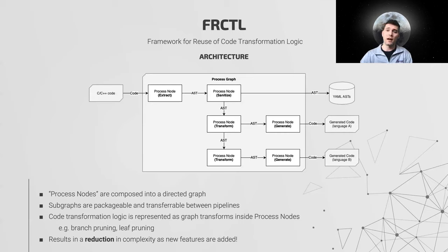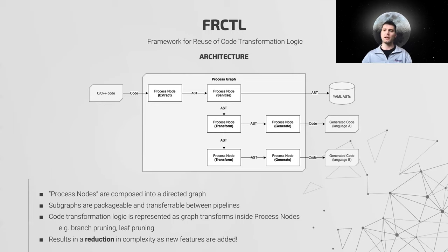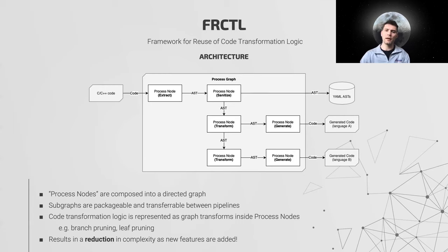The name Fractal is a nod to the fact that the structure of both the framework and the data upon which it operates are both recursive. Both are treated as directed graphs with code generation pipelines separated into small atomic logical chunks known as process nodes. Each node performs its task and passes the resultant syntax tree to the next process node in the process graph in the style of TensorFlow networks. In this example pipeline, there are five stages, each with its own task, such as extracting subsections of code, performing data sanitization such as type checking, transforming the graphs and generating code.